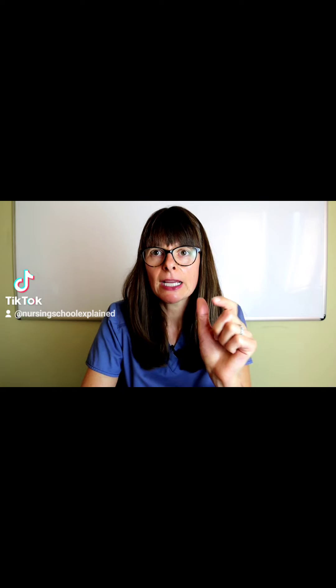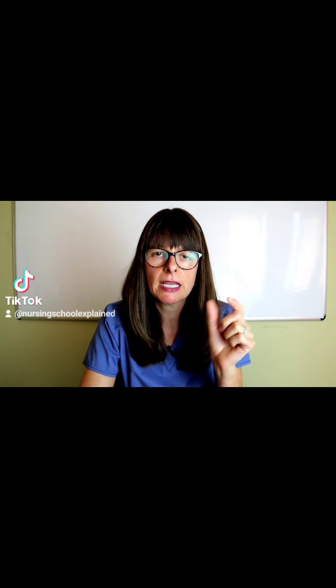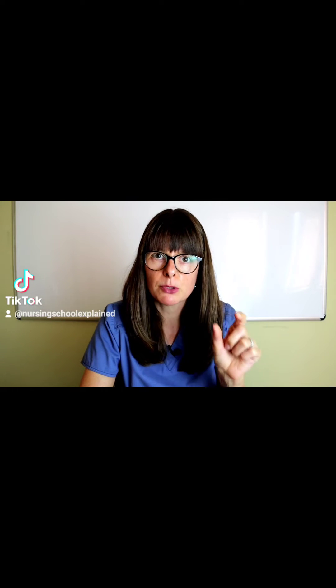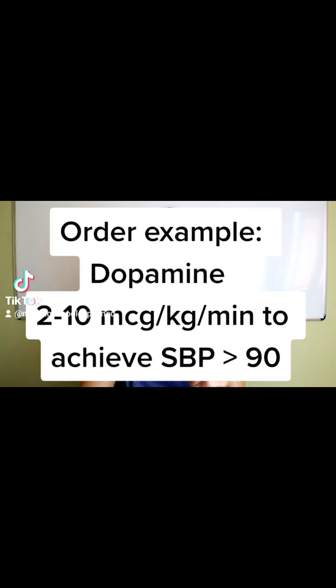What that means is that we want to adjust the medication to a certain micrograms per minute ratio so that we achieve a certain blood pressure, in this case for vasopressors. So the order might read: give dopamine 2 to 10 micrograms per kilo per minute to achieve a systolic blood pressure greater than 90 millimeters of mercury. That would be an order.